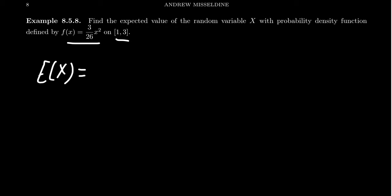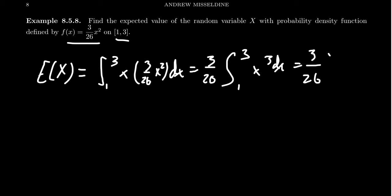This would be 1 over the area, which is always 1 since it's a density model. You integrate from 1 to 3, x times 3 over 26 x squared dx. Take out the 3 over 26, we have to integrate from 1 to 3 the x cubed dx. That changes the calculation from before.